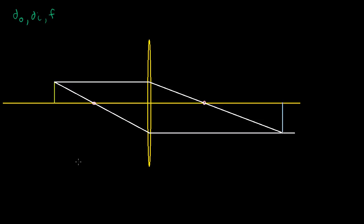Just to save you the pain of having to watch me draw straight lines, I drew this ahead of time. We can imagine this green thing right here is the object, and these two little pink points right here are the focal points — they're a focal length away. I drew one parallel ray from the tip of that arrow to the convex lens, and then it gets refracted so it goes through the focal point on the right-hand side. Then I drew a ray that goes through the focal point on the left-hand side, and when it gets refracted it becomes parallel, and it intersects with that previous ray up here. This gives us a sense of what the image will look like — it's inverted, it's real, and in this case it is larger than the actual object.